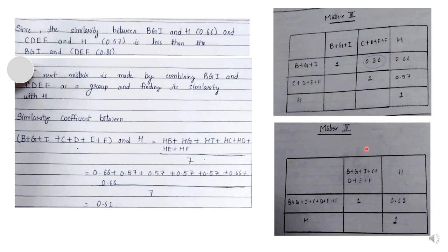Our conclusion from all the matrices: from matrix 2 we concluded that B, G, I and C, D, E, F are the two major clusters. From matrix 3 we concluded that B, G, I and C, D, E, F are at a similarity index of 0.86, and H has a similarity index of 0.61 with the combined cluster of B, G, I, C, D, E, F. Now we will put all these values in the diagrammatic form of a dendrogram.